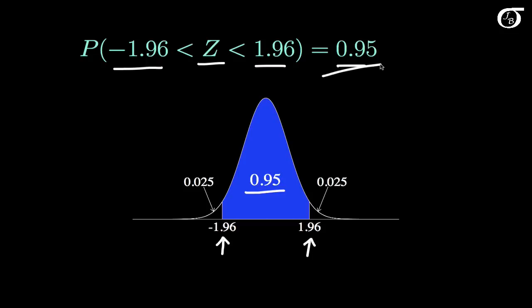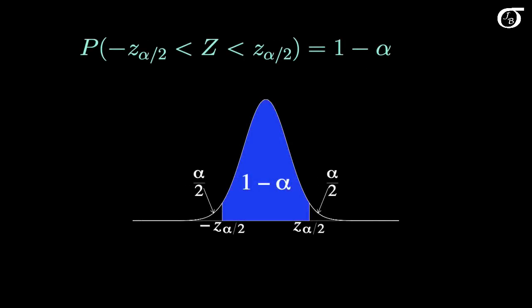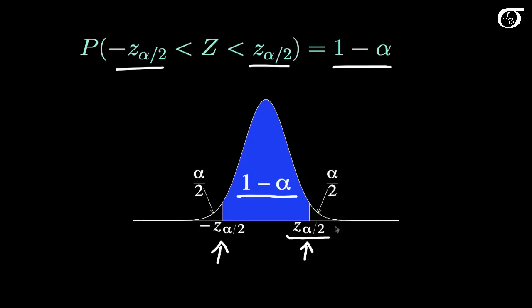I'm choosing 0.95 because the 95% confidence level is the most common, but we can pick any confidence level we like. To generalize: the probability that z takes on a value between minus z sub alpha over 2 and z sub alpha over 2 is 1 minus alpha. The remaining area, alpha, is split evenly into the two tails. Z sub alpha over 2 is the value of z that yields an area to the right of alpha over 2.